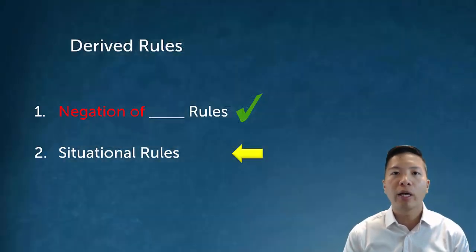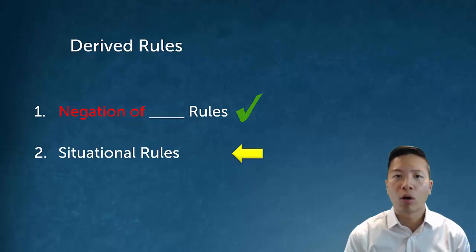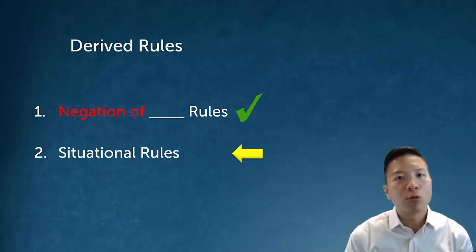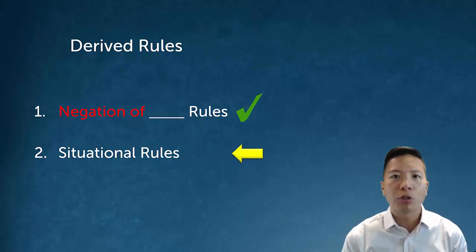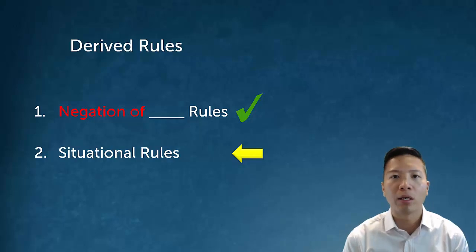Negation of conditional, negation of biconditional, and DeMorgan's — which is the negation of disjunction and the negation of conjunction — are our derived rules for our system. There are obviously lots of other helpful theorems with names, and we could expand our list of derived rules further. But for our purposes, we're only going to add two others, which are situational rules that come up every once in a while.